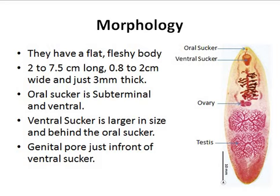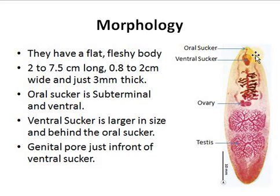Now we will discuss the morphology of Fasciolopsis buski. The worm has a flat and fleshy body. It is 2 to 7.5 cm long, 0.8 to 2 cm in width, and just 3 mm in thickness. The oral sucker is sub-terminal in position. The ventral sucker is larger in size compared to the oral sucker. The genital pore is present just in front of the ventral sucker. Testes are posterior in position and ovaries are present in front of the testes.